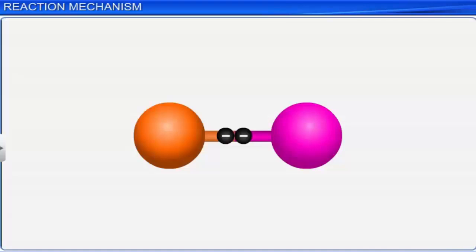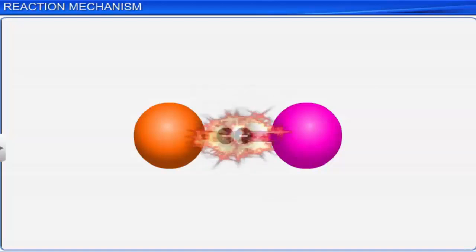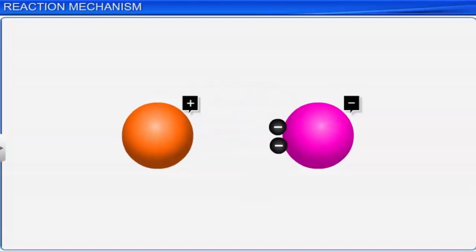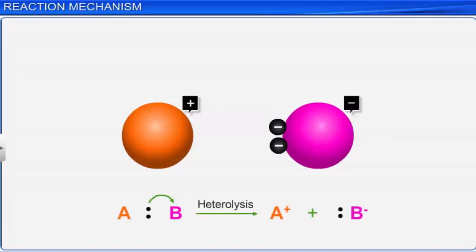Heterolytic cleavage is just the opposite of homolytic cleavage. In heterolytic cleavage, a bond is broken unequally and the shared electron pair goes to the more electronegative atom.